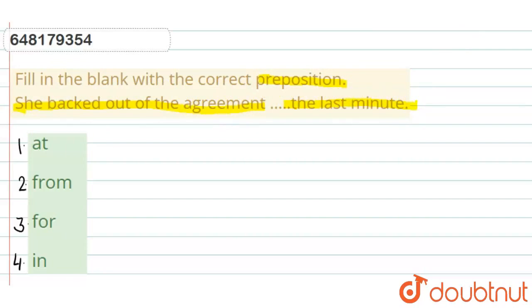Here we are given four options. One by one सबको discuss करेंगे. First option है at. At जो है वो यूज होता है to denote exact time या फिर exact location. Exact time या exact location को जो हम डिनोट करते हैं, तो हम at यूज करते हैं.